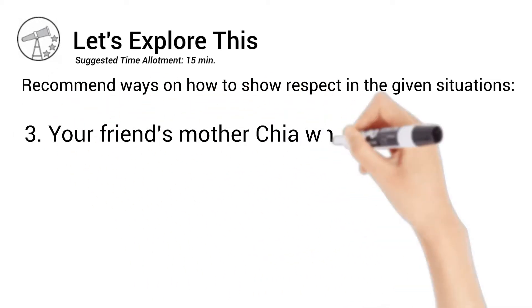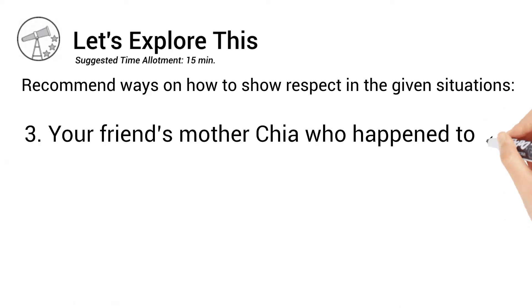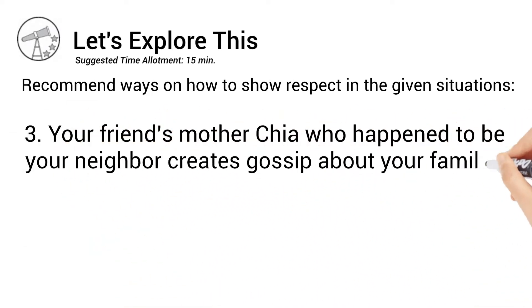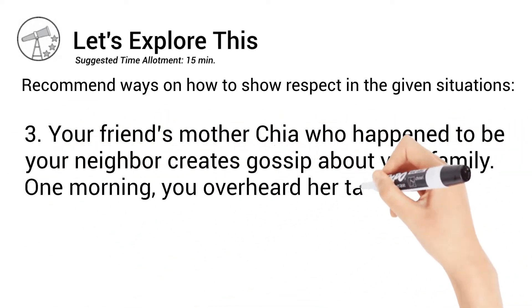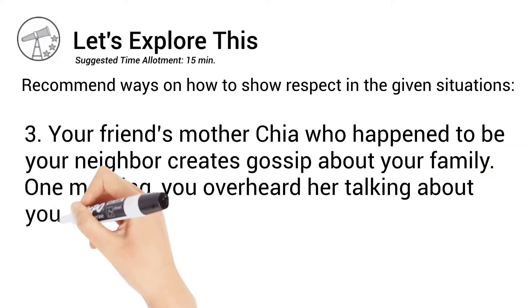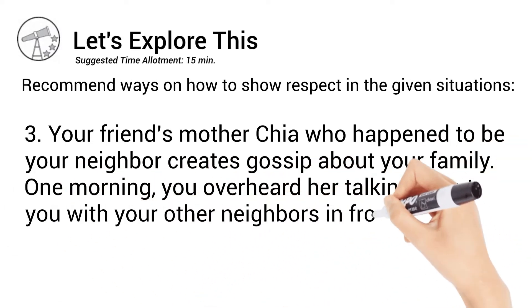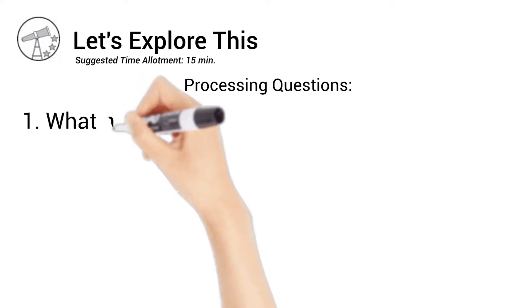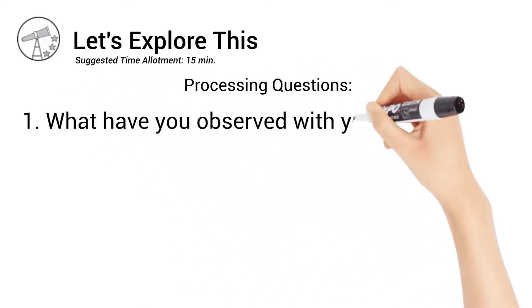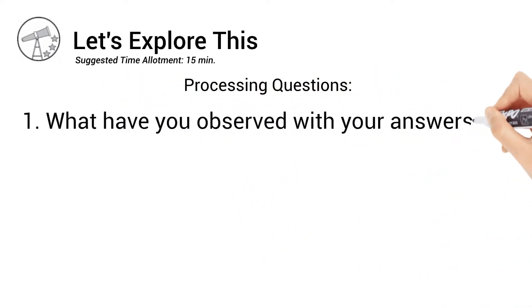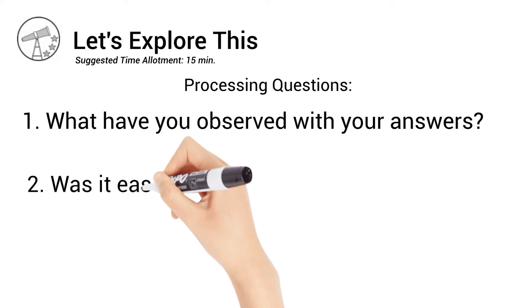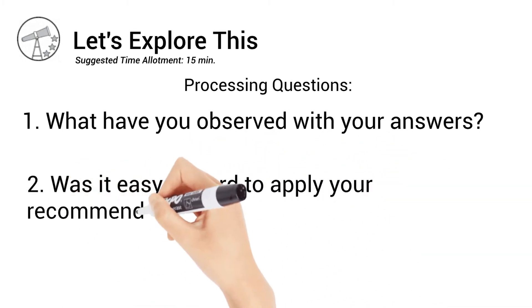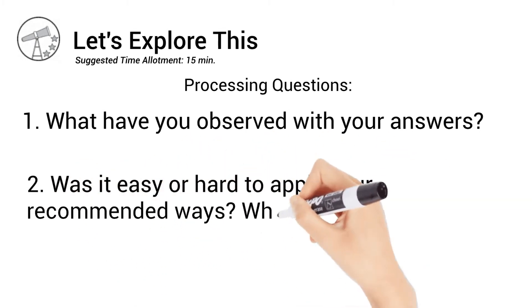Situation 3: Your friend's mother, Chia, who happened to be your neighbor, creates gossip about your family. One morning, you overheard her talking about you with your other neighbors in front of your house. Processing Questions: What have you observed with your answers? Was it easy or hard to apply your recommended ways? Why?